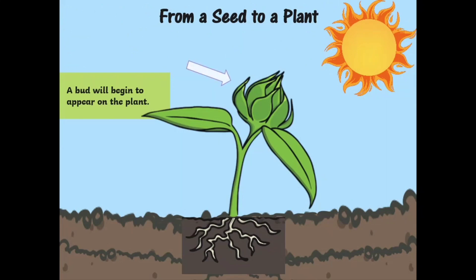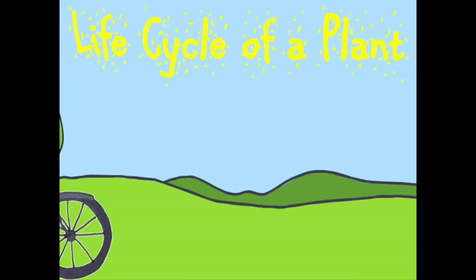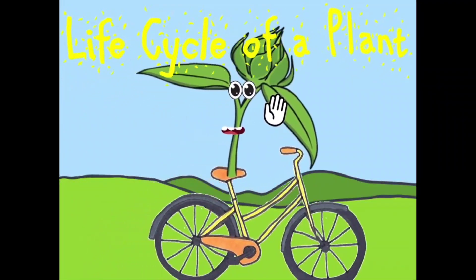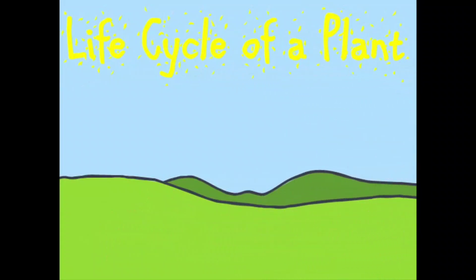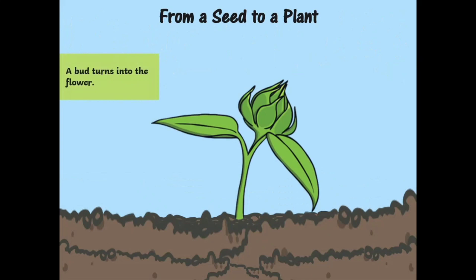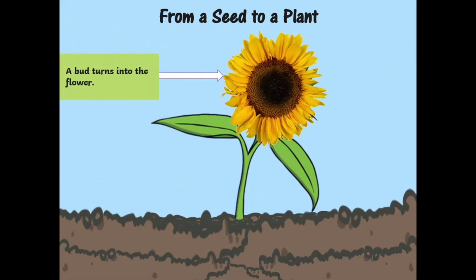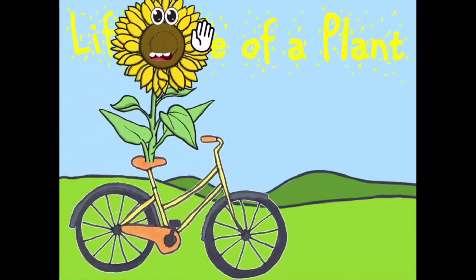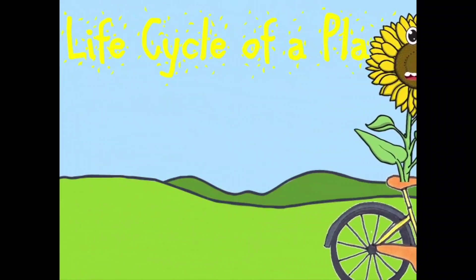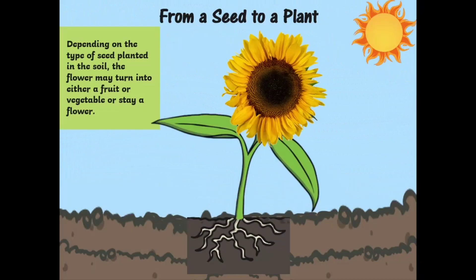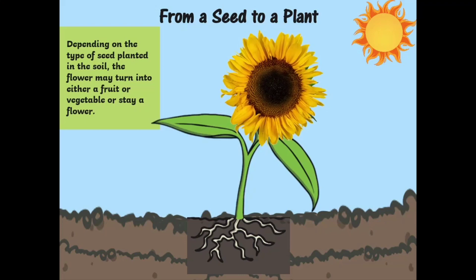A bud will begin to appear on the plant. The bud will turn into a flower. Depending on the type of seed planted in the soil, the flower may turn into either a fruit or vegetable, or stay a flower.